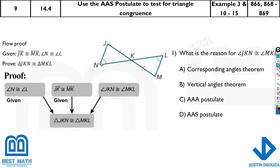We need to prove these two triangles are congruent to each other. Since the objective is AAS postulate — angle-angle-side — we have one side and one angle, so we need one more angle. Looking here, this is the vertically opposite angle at K, because whenever we have opposite angles like this, they're equal.